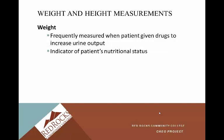Weight is frequently measured when the patient is given drugs to increase urine output. If the patient has been given a diuretic, we're going to measure their weight to find out what their status is and whether there's a change. It's also a good indicator of the patient's nutritional status. If the patient is losing a lot of weight or having changes in nutritional status, weight may be measured more frequently as a measurement of their overall health status.